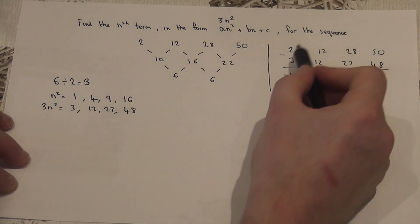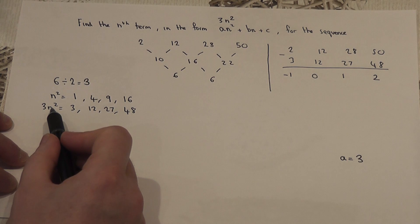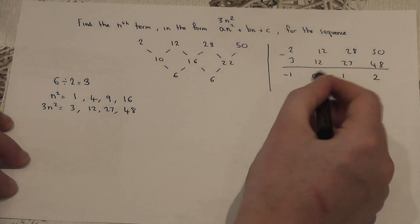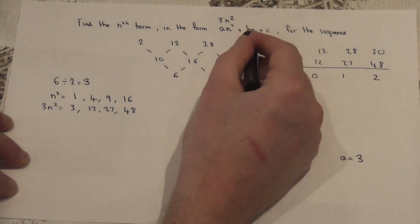So, I did the original take away 3n squared, in this case. So, if I can then find the nth term for this left over sequence, the left over bit has got to be the b and the c.